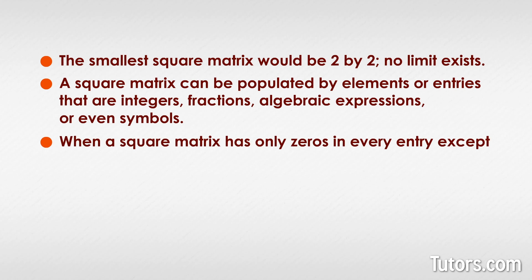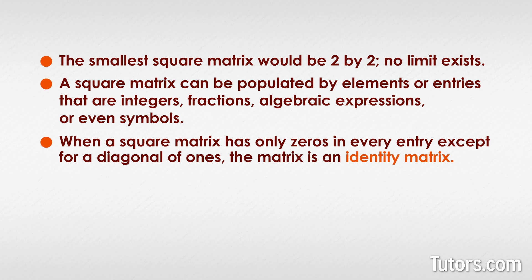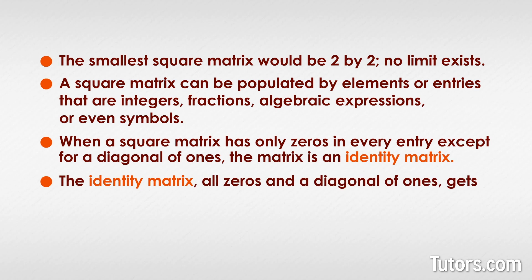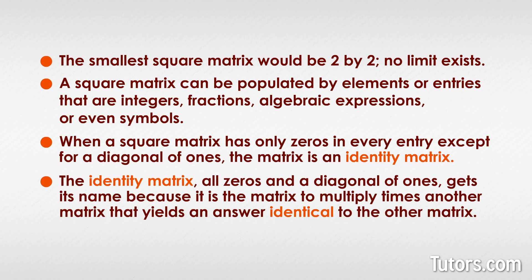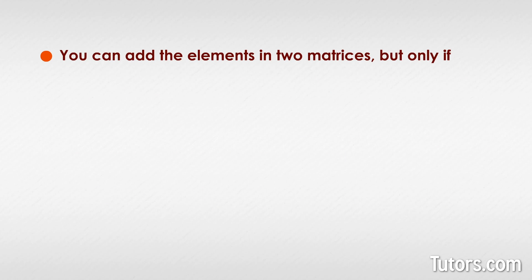Many matrices are filled with nothing but zeros and ones — the binary language of computing. When a square matrix has only zeros in every entry except for a diagonal of ones, the matrix is an identity matrix. The identity matrix gets its name because multiplying it times another matrix yields an answer identical to that other matrix — it gives back the matrix you started with, just as 1 times 5 gives you back 5, or 2018 times 1 gives you 2018.